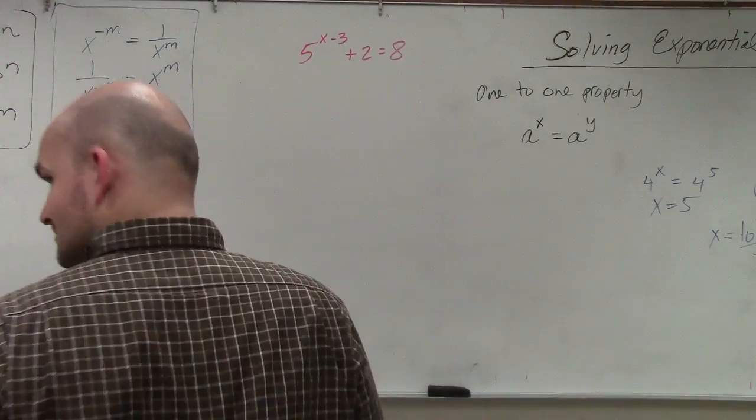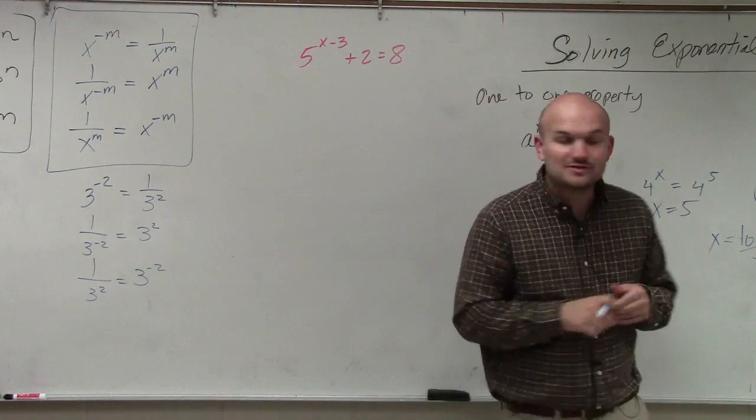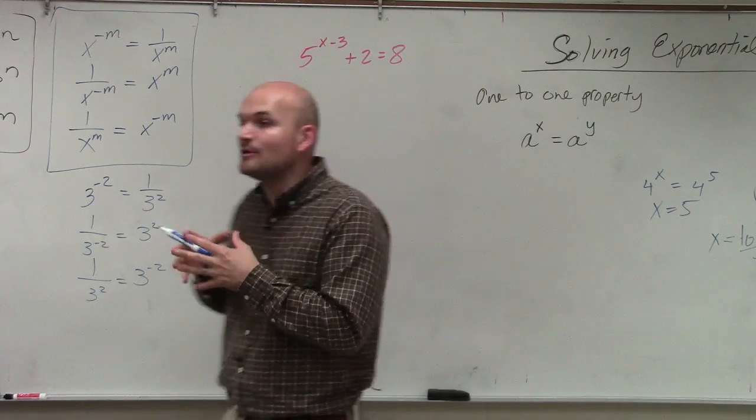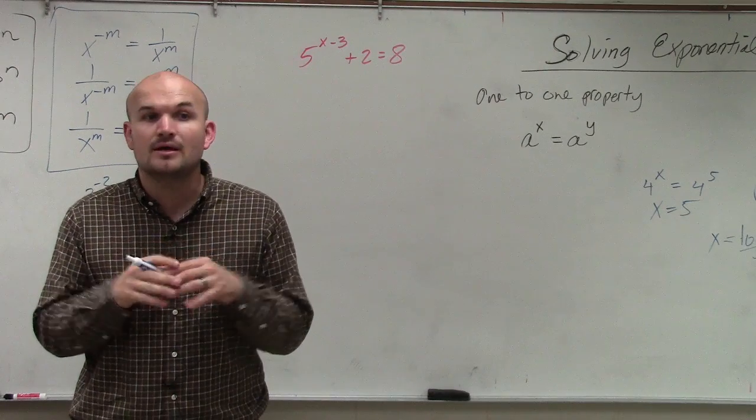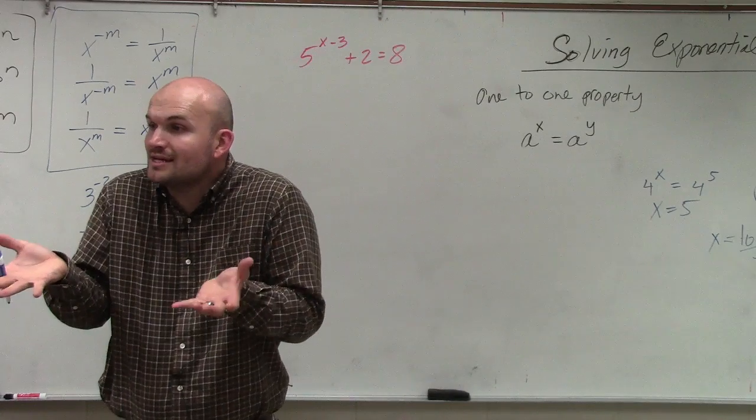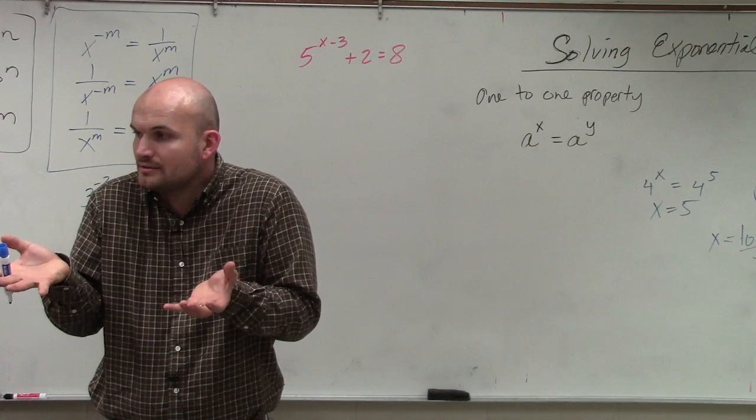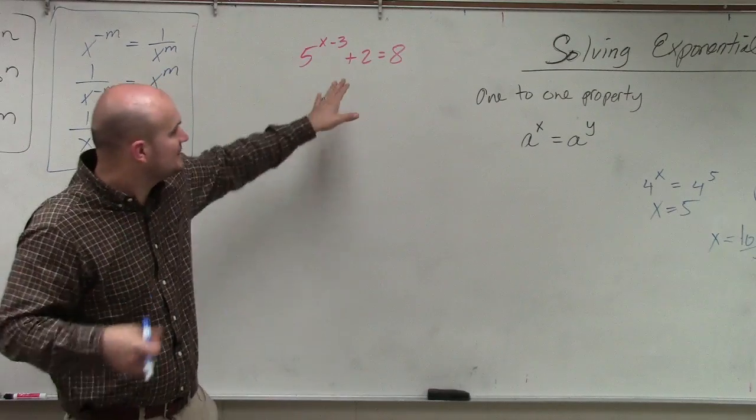All right, so the main important thing is we have 5 raised to the x minus 3 plus 2 equals 8. So the main important thing to apply the one-to-one property, basically what we need to do is isolate the exponent. We can't even use that property unless we have the exponent isolated.